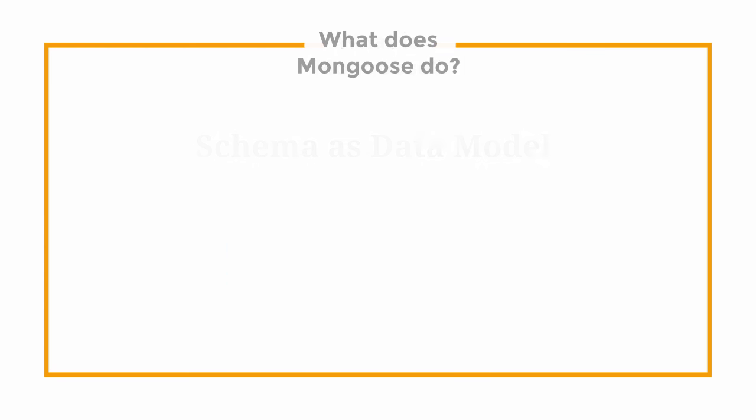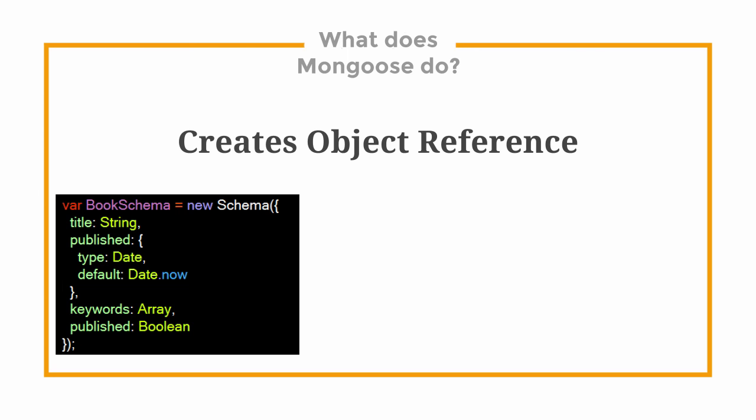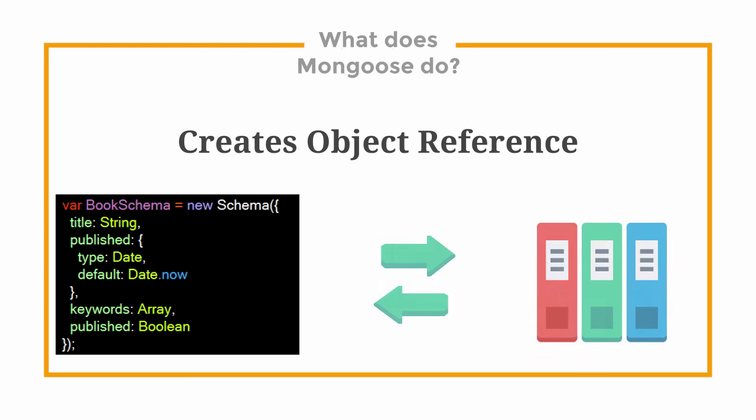So what does Mongoose do? Mongoose creates an easy-to-use object reference when interacting with MongoDB. And what makes Mongoose great is that our database gets modeled within our code.